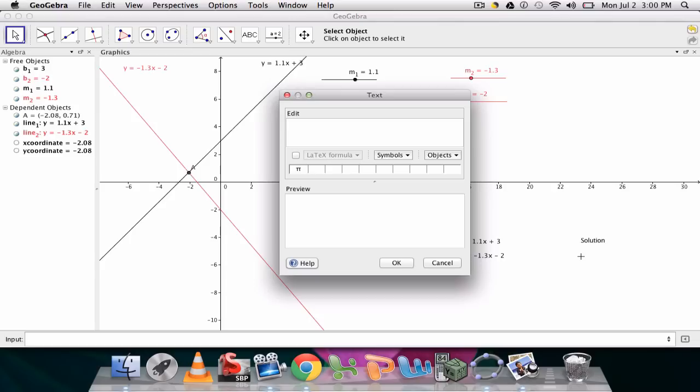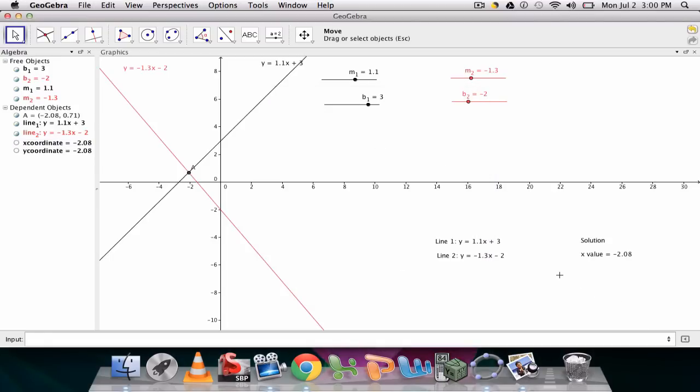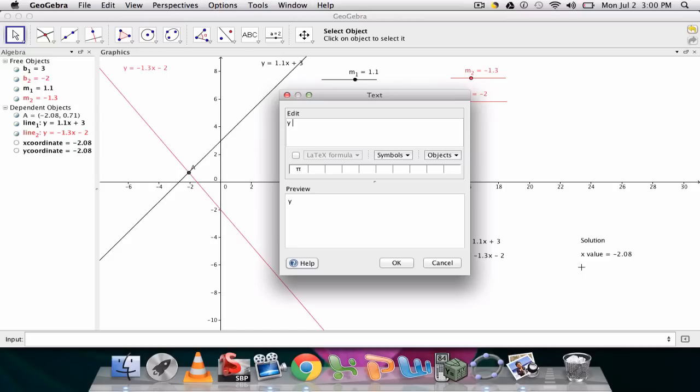And point A is made of x and y values. So I would say x value equals. And then type in, click, excuse me, at the x coordinate. And then the same thing for the y value. And this shows the point that's the solution of the intersection. So the y value equals the y coordinate.